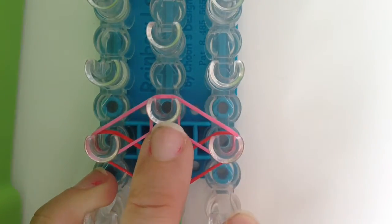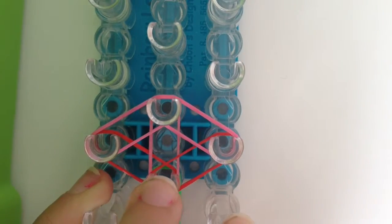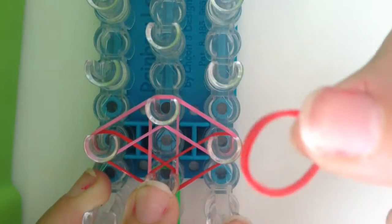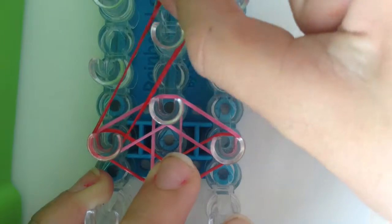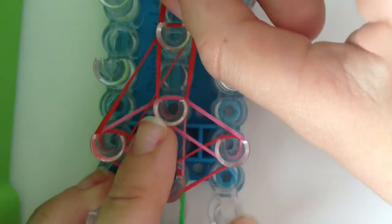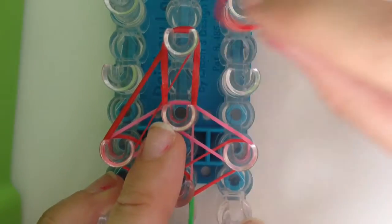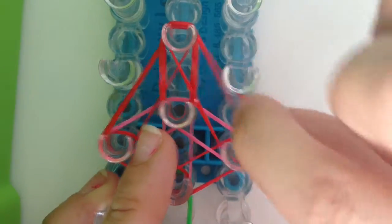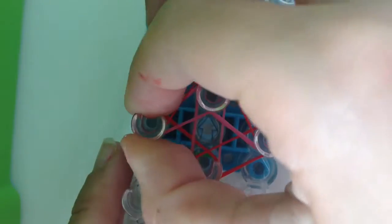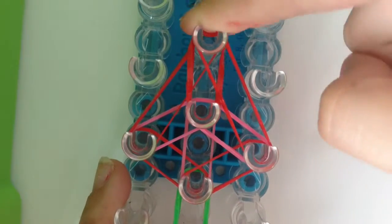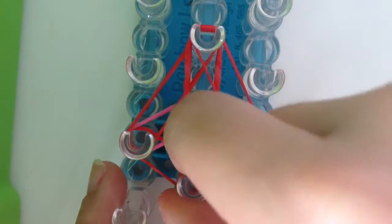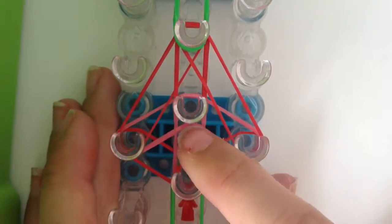And then you will get your red color and stretch it towards there. Do this on the middle and do it on the right side and push all your bands down. As you can see that nearly fell off my loom, so you push all of them down.